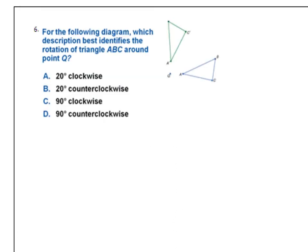Before number 6, label corner B prime at the top. We have A prime, C prime already labeled — that should help as you work through number 6. Your job is to figure out how much it rotated and in which direction. It rotated counterclockwise, so eliminate clockwise options A and C. Take A and A prime, connect to the origin — it looks like about a 90-degree rotation. Answer: 90 degrees counterclockwise.